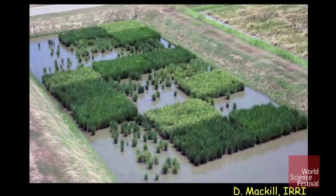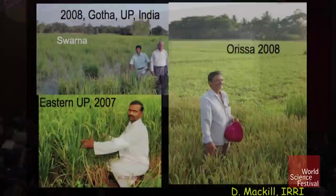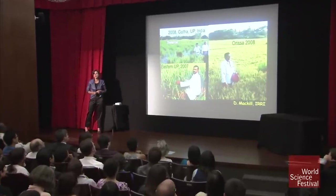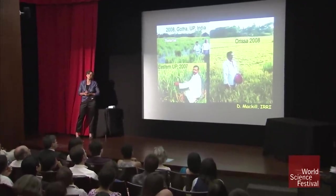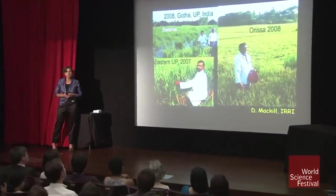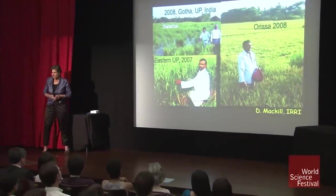Dave Mackill and his colleagues at the International Rice Research Institute then used precision breeding to introduce this gene into different locally adapted varieties — you can see the rice are different colors, and you can guess which plants lack this submergence tolerance gene. Field tests in eastern India and Bangladesh over three years showed farmers seeing a three- to five-fold increase in yield, demonstrating the power of genetics and genetic improvement for improving the lives of the poor and malnourished in developing countries.